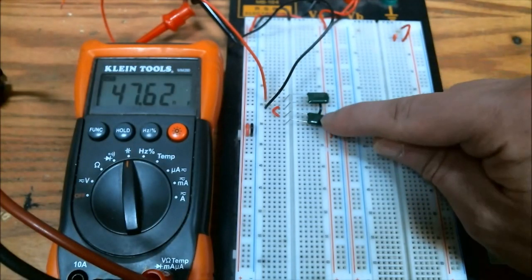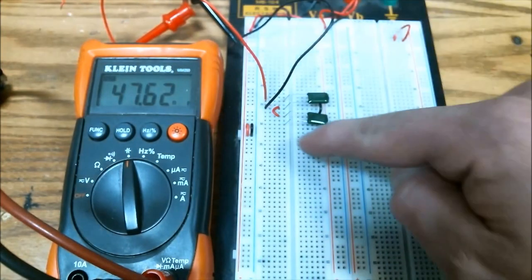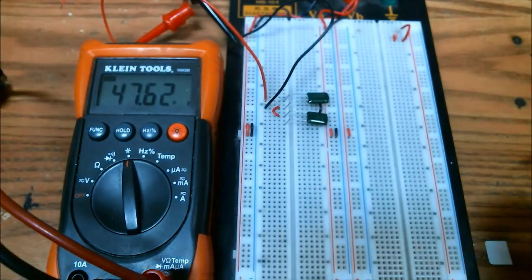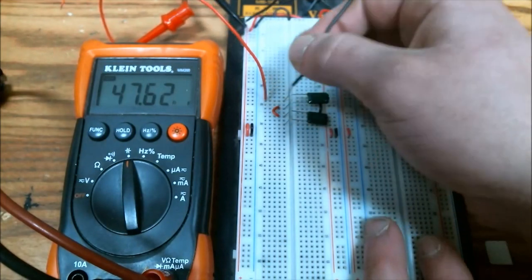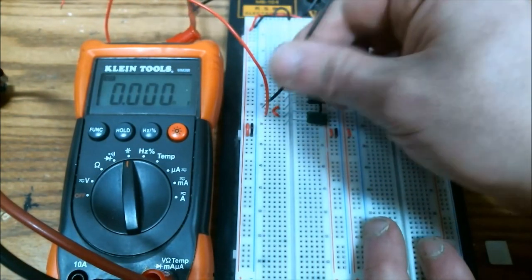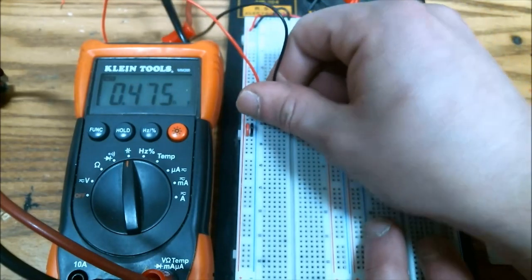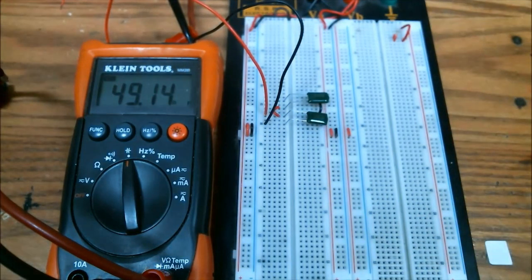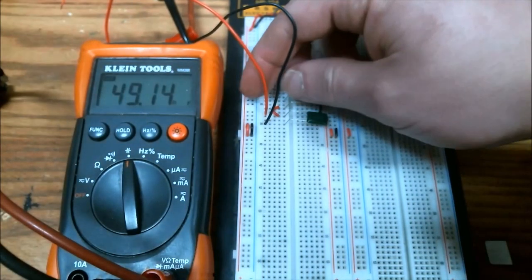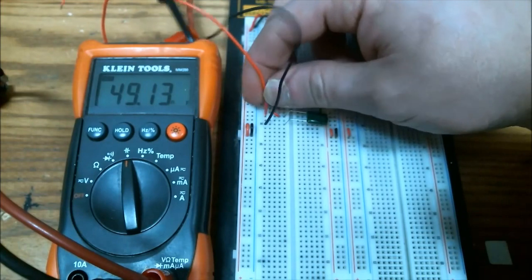So we'll call this one C1 and we'll call this one C2. So right now I'm measuring across just C1 so we can see it's at 47.6 nanofarads. And if we switch over to measure across C2... Now this one's a little higher, it's at 49.1. So they're not quite exactly the same but they're pretty close.